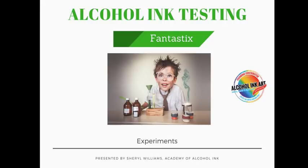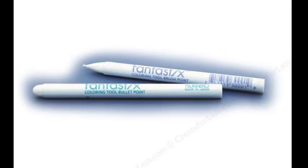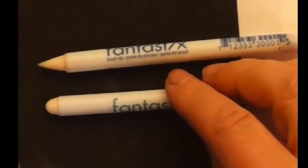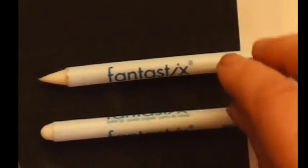Okay, today we're going to look at a blending tool called Fantastix, and it's spelled a little weird - F-A-N-T-A-S-T-I-X. It comes in two different tips. That's the pointy tip and then this is a rounded tip.